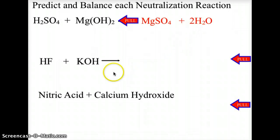In the case of hydrofluoric acid, HF, combining with potassium hydroxide, KOH, the metal, potassium, will join the negative ion, fluorine, to give us potassium fluoride. And the H and OH will combine to give us a single molecule of water.